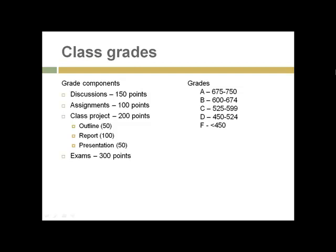Here are the grades related to the various components. There will be 15 discussion boards at 10 points each, for a total of 150 points. There will also be assignments that simulate what we'd be doing in a face-to-face class or lab. The class project has three graded parts: an outline worth 50 points due midway through the class, the actual report worth 100 points, and your YouTube presentation worth 50 points. There will also be three exams — multiple choice and short answer — worth 100 points each. Total: 750 points for the class.